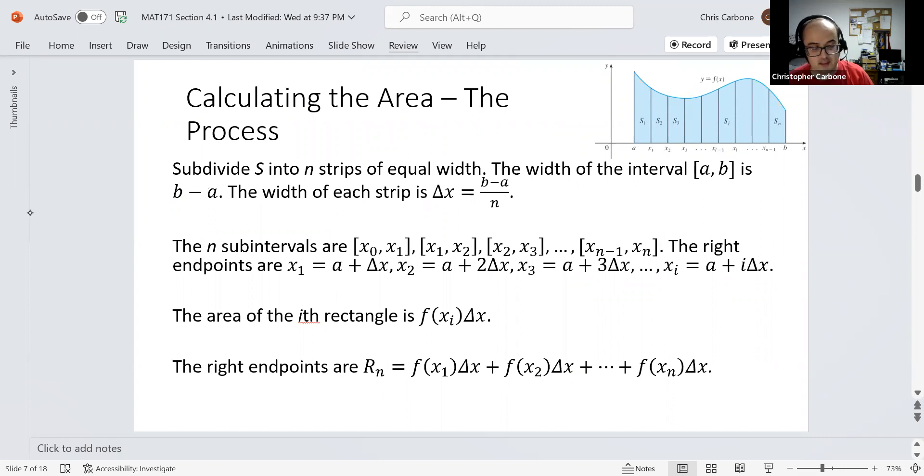The actual process of this, we need to subdivide S into whatever number of strips that we entail, in this case n strips of equal width. The width of the closed interval a to b would be b minus a, so the width of each strip, delta x, is b minus a divided by n. And we could see that splits this up into subdivisions of that entire area into each of those strips. We have those n subintervals being closed subintervals, being x sub 0 to x sub 1, x sub 1 to x sub 2, all the way down to x sub n minus 1 to x sub n. And we could find our right endpoints, being x sub 1 being a plus delta x, x sub 2 being a plus 2 times delta x, all the way down to x sub i being a plus i times delta x.